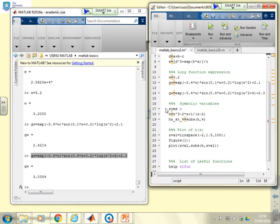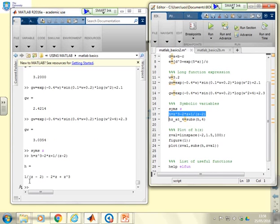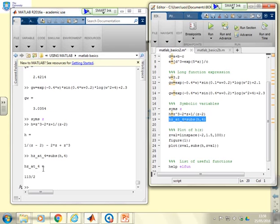Symbolic variables. I've defined a variable there, symbolic variable to be Z, and then I've generated this function of Z which I've called H. You see it's written out as a function of Z. And if I want to evaluate H at Z equals 4, I use this subs H 4. And there we see H of Z at 4 is 113 over 2.